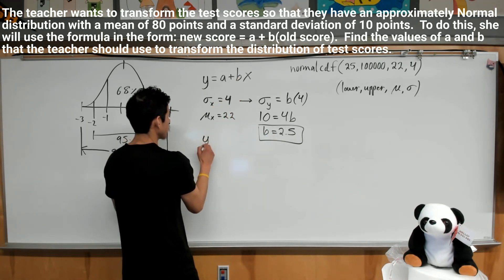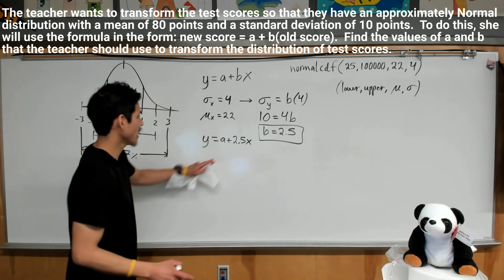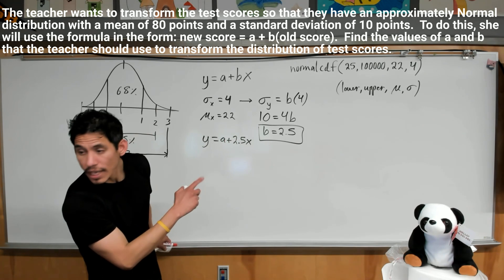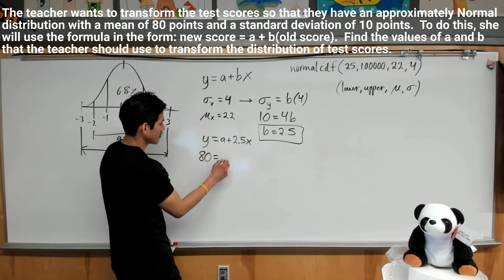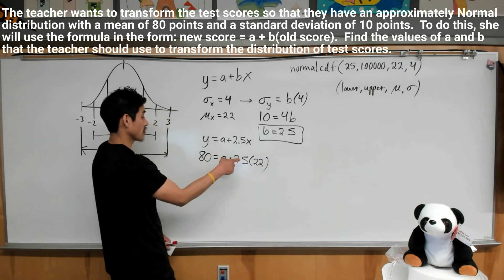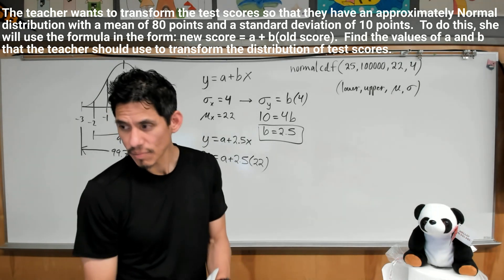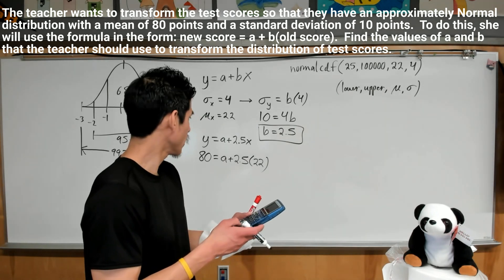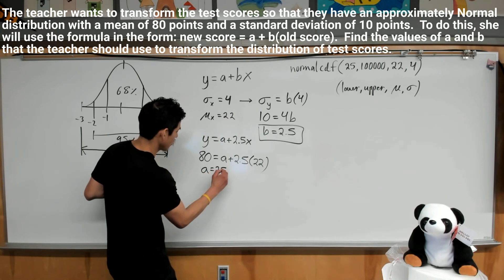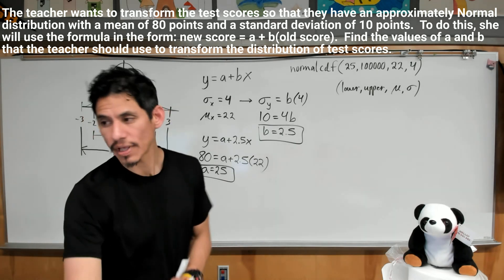Now I can plug this into there and just solve for A. A plus 2.5x. Now to find A, I can plug in the old mean. So the old mean was 22 and she wants the new mean to be 80. So I can put 80 equals A plus 2.5 times the old mean, or times 22. That'll be 55, 80 minus 2.5 times 22 is 25. And so here are my values, 2.5 and 25. Yeah, there we go.